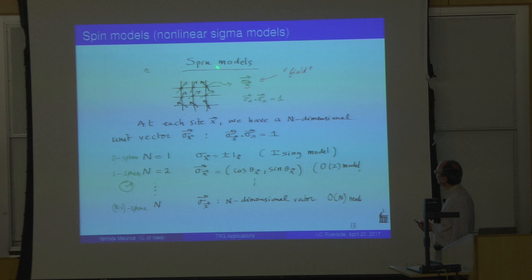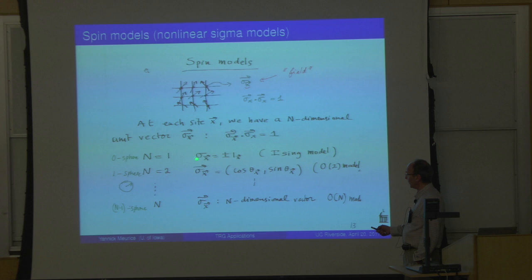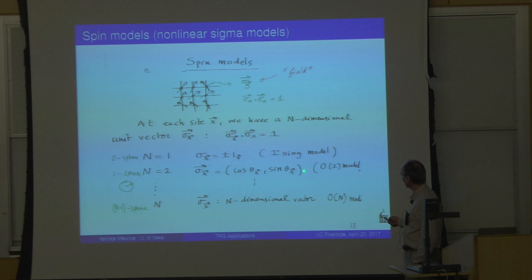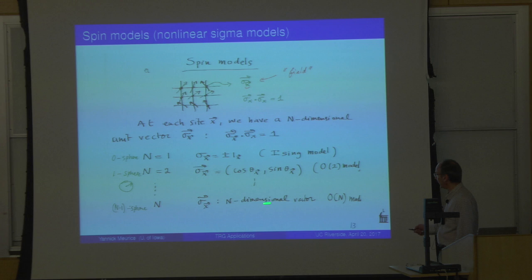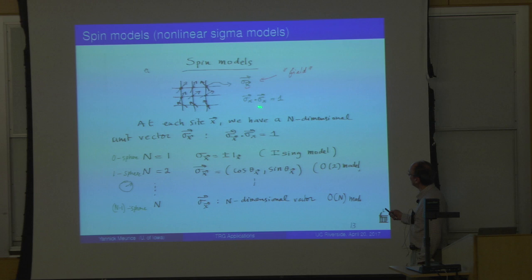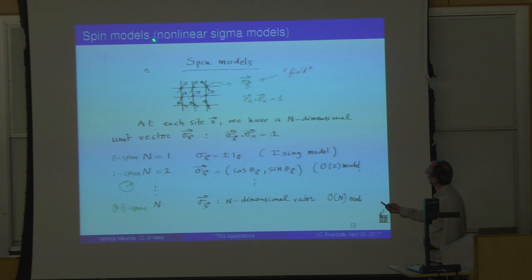You can generalize to hypercubic lattices in any dimension algebraically — sites are integers, links are integers with a direction, and plaquettes are integers with a pair of directions. Models particularly interesting for lattice gauge theorists are spin models, because they have compact fields. The simplest example is the Ising model, with spin up or down at every site. If the vector is two-dimensional, you have an angle — that's the O2 model, which in two dimensions has a Kosterlitz-Thouless transition. You can generalize to n-dimensional ON models, where the field is constrained to an (n-1)-dimensional sphere, and they appear in nonlinear sigma models.